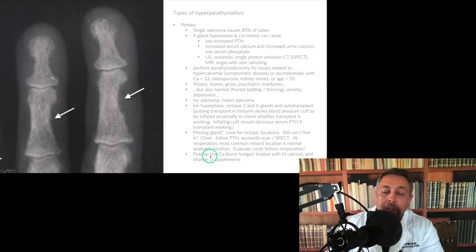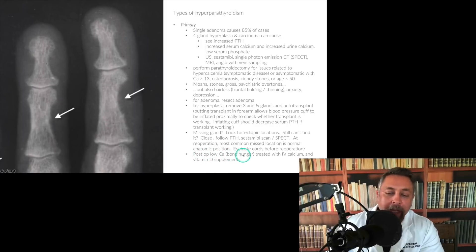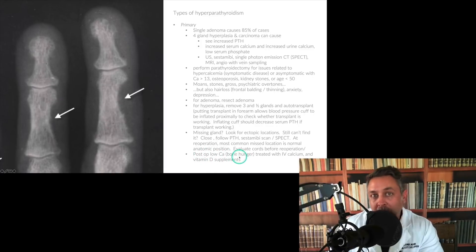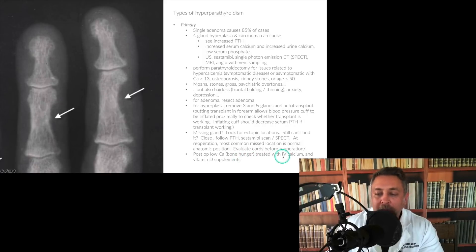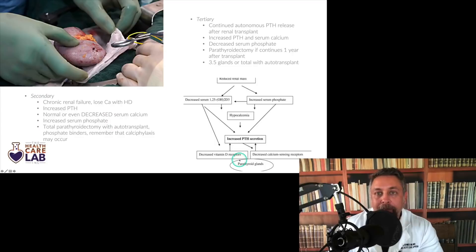Post-op low calcium after parathyroid resection, or bone hunger — where the bones quickly resorb calcium to get back up to speed — is treated with IV calcium and vitamin D supplementation.